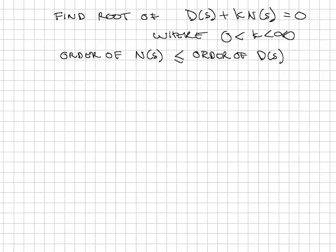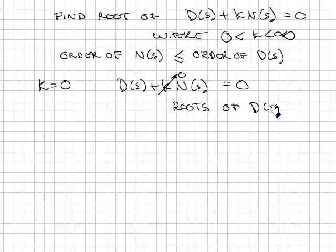Let's first look at the extreme values. What happens when k equals 0? The polynomial D(s) plus k N(s) equals 0, that goes to 0, so then it's just the roots of D(s).